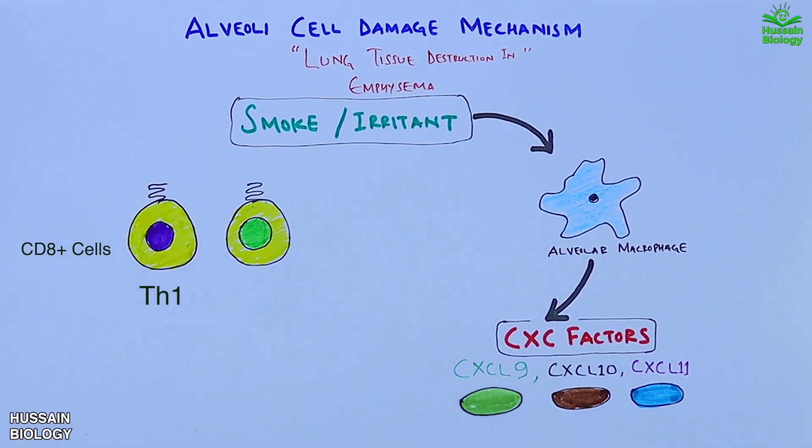Both these cells have CXCR receptors on their membrane, shown in the diagram. So upon the release of CXC factors from alveolar macrophages, they come in and bind with the CXCR receptor, shown in the animation.